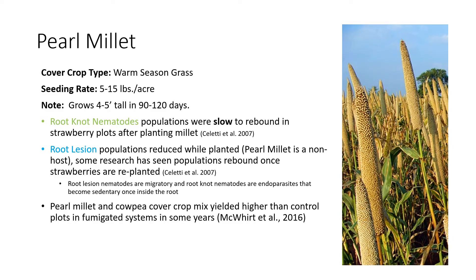I'll focus on two major grasses and one legume cover crop that work well in the southeast. The first grass is pearl millet, a warm-season grass with a seeding rate of around 5 to 15 pounds per acre, growing 4 to 5 feet tall in 90 to 120 days. Research has shown that root-knot nematodes are slow to rebound in strawberry plots after planting millet, and root lesion populations were reduced while pearl millet was planted. Work done with my advisors at NC State found that a pearl millet and cowpea combination yielded higher than the no-cover-crop control in fumigated systems in some years.